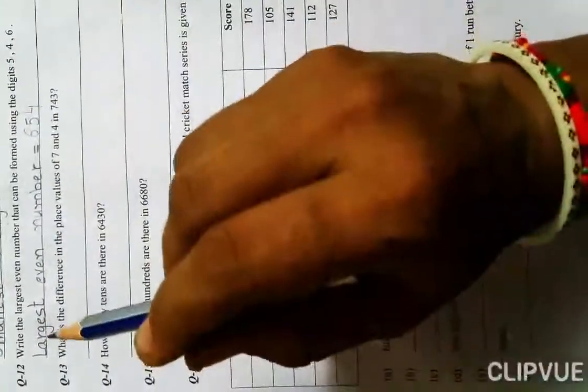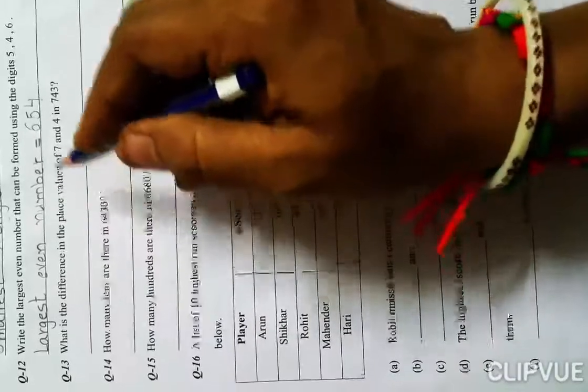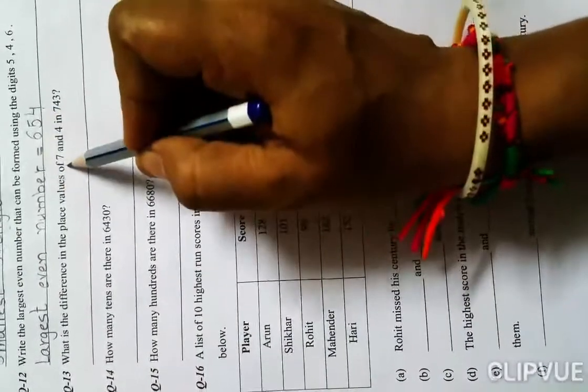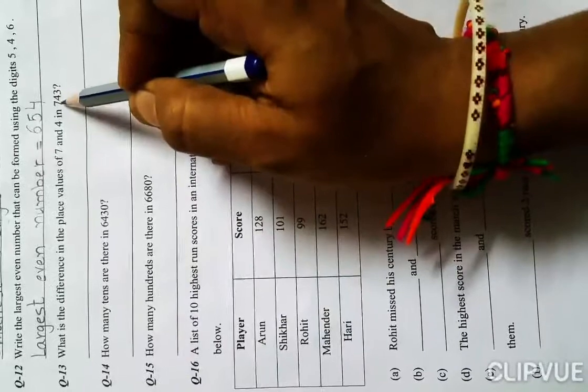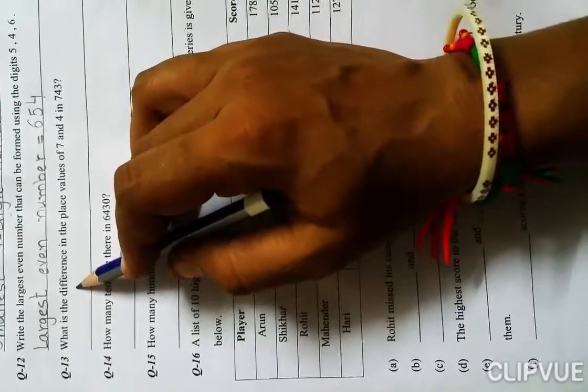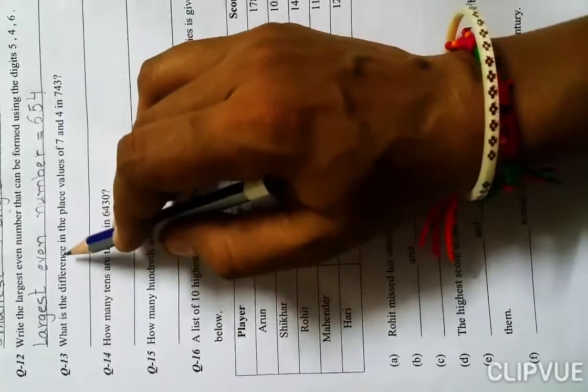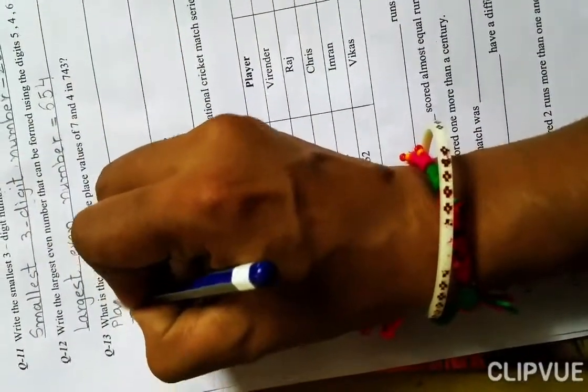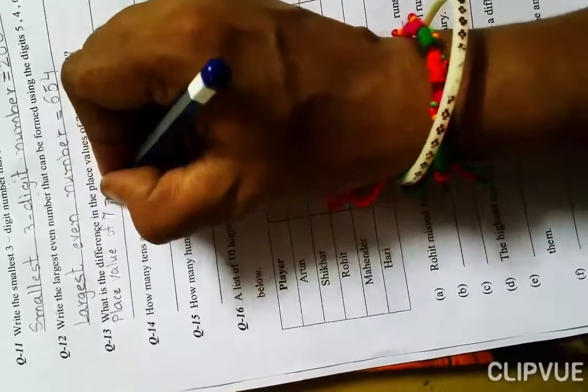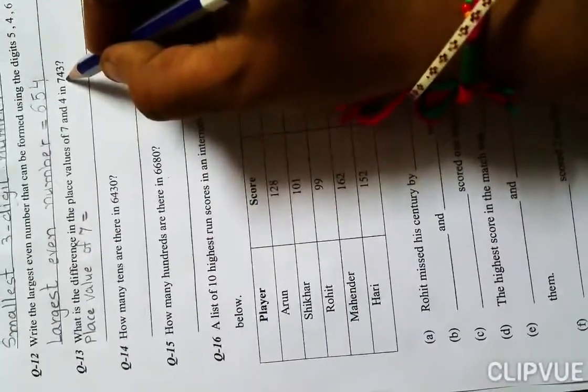What is the difference in the place values of 7 and 4 in 743? Place values of 7 and 4 means we need to write the place values first, then find the difference. I already explained in second grade that the answer of subtraction is called difference. So now we write the place values first.